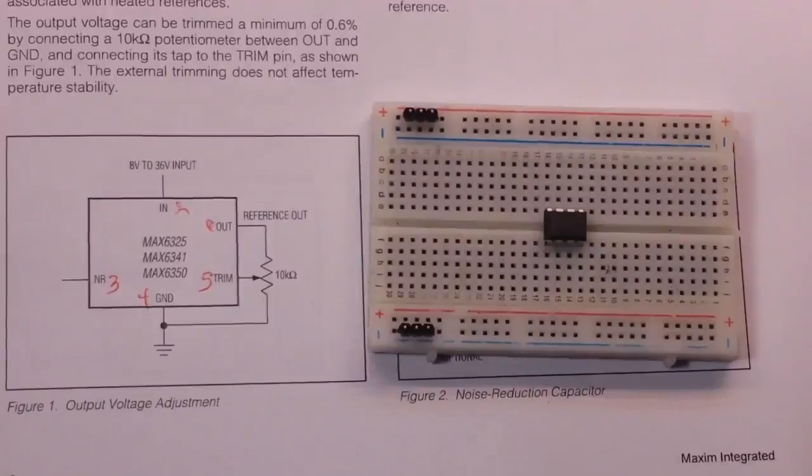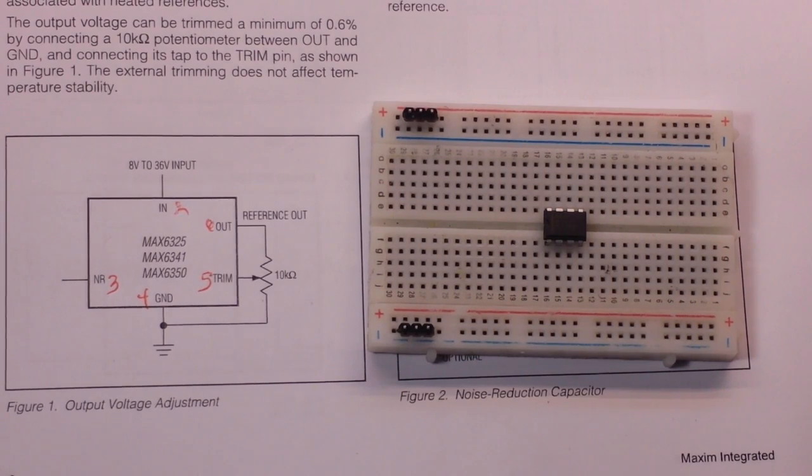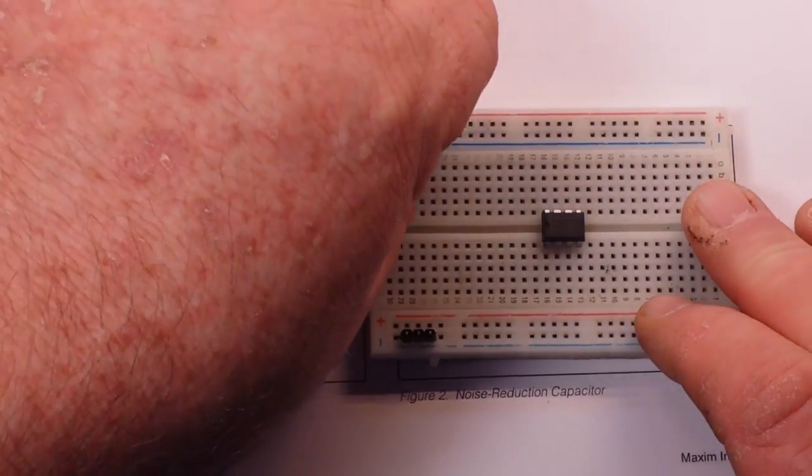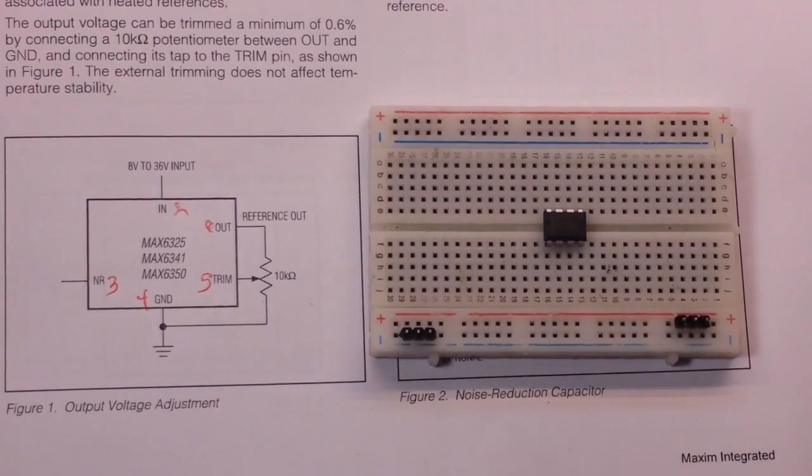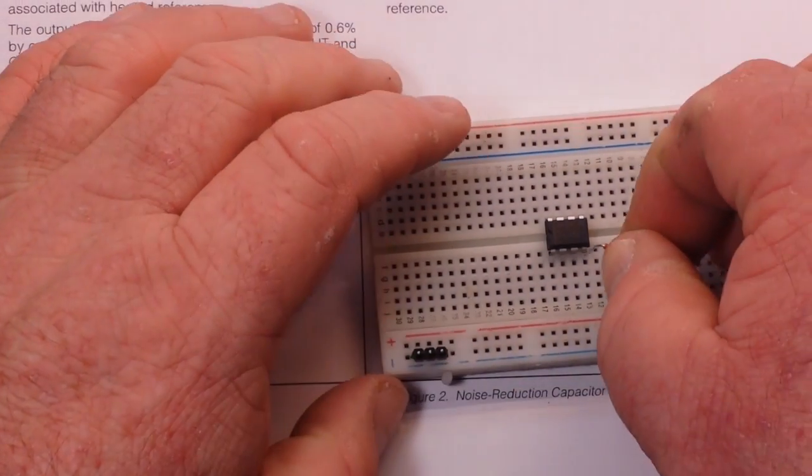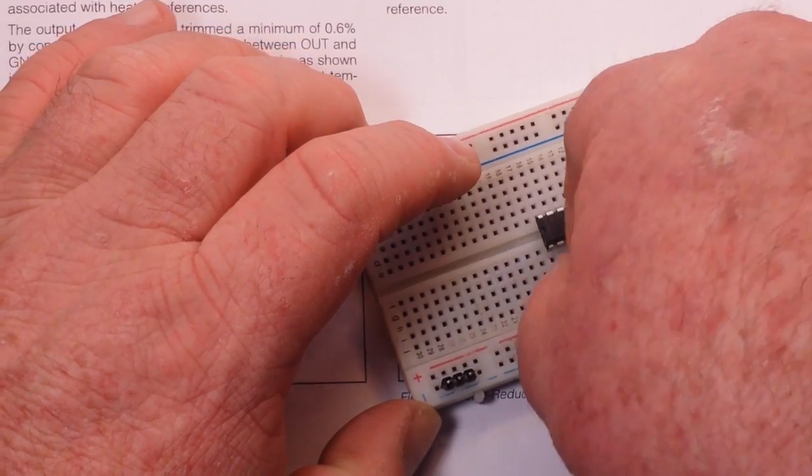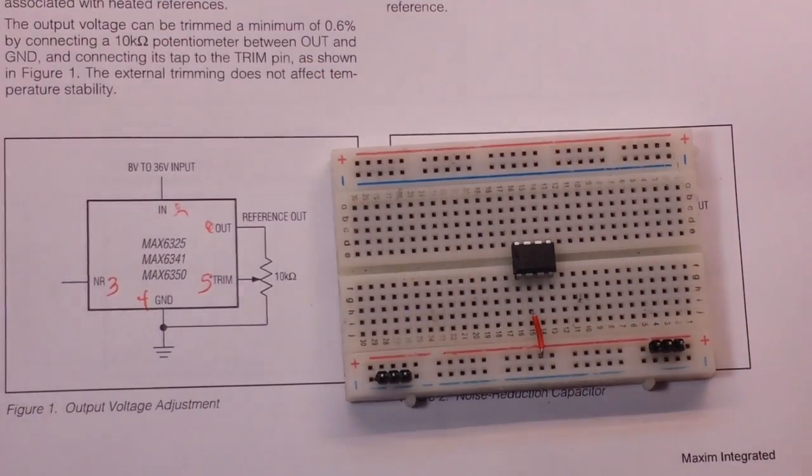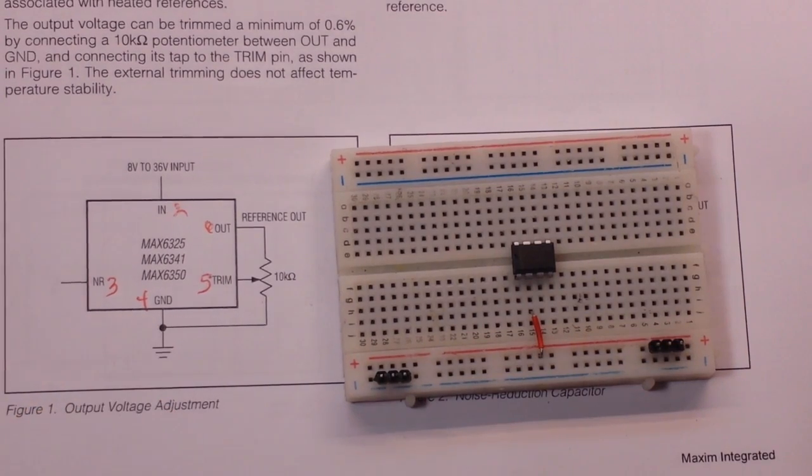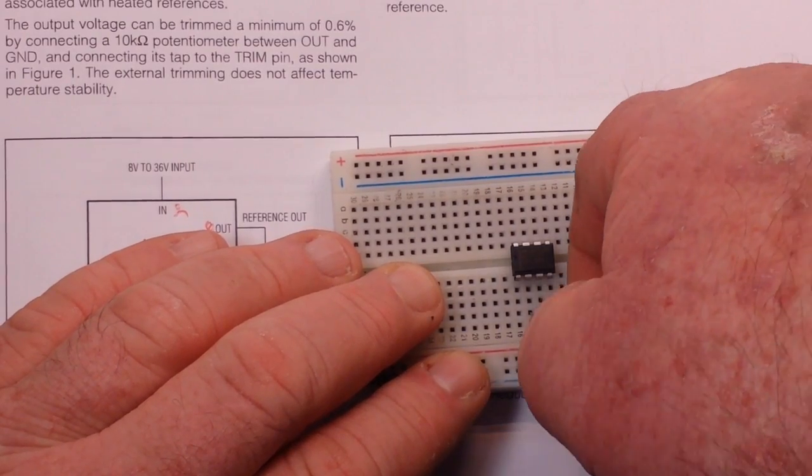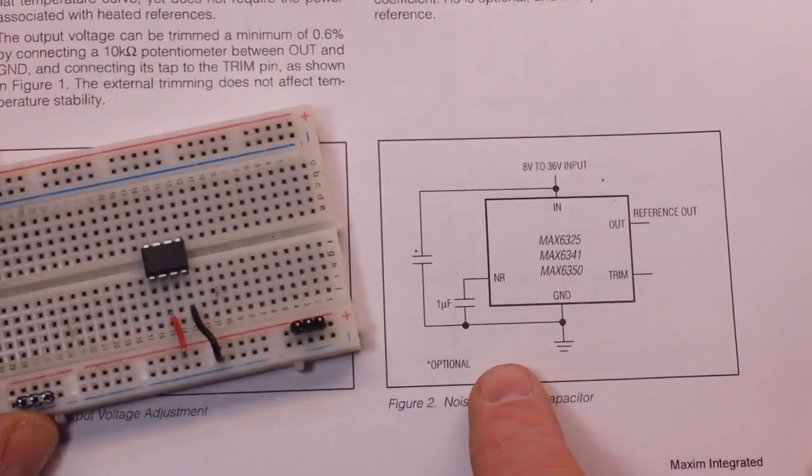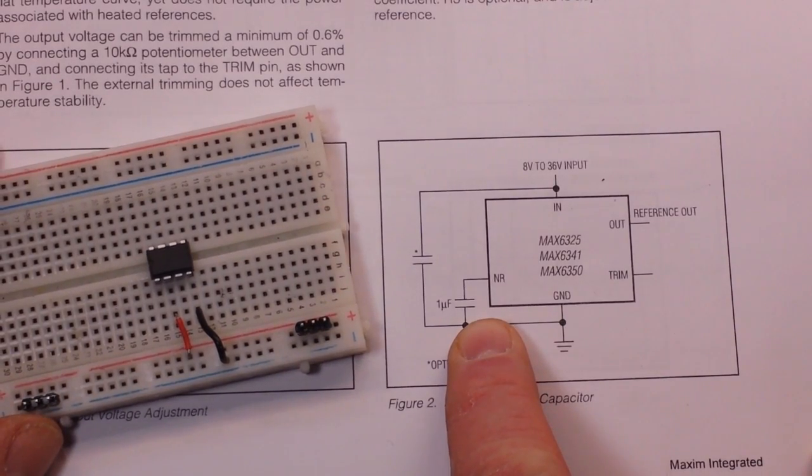What we got there is the MAX6350, just a little eight pin package there. Nothing too exciting. Let's see if we can't make a circuit. All right, so we've got our on a breadboard here. Our in is pin number two, so I guess we're going to do here... let's put both our positive and negative on one side of the breadboard. So in is pin number two. That will be our voltage in.